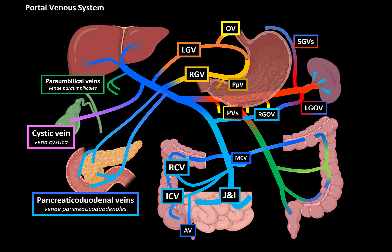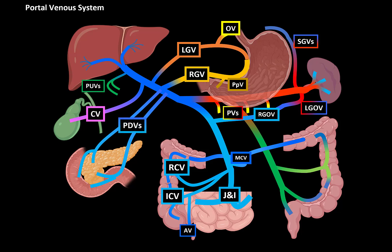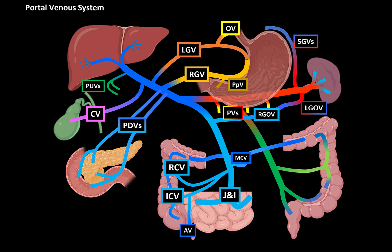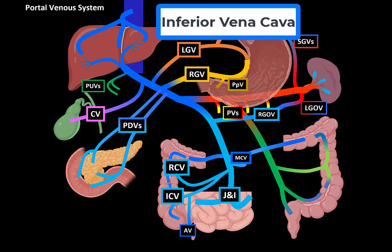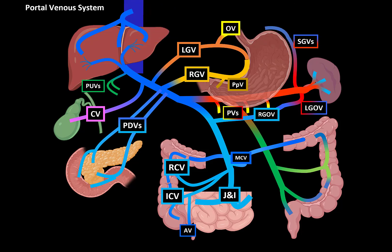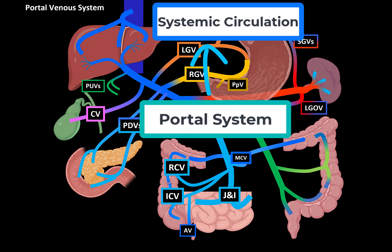All of these veins unite to form the portal vein, which enters the liver and branches off to various lobes. The right, intermediate, and left hepatic veins then drain blood from the liver into the inferior vena cava — that is how blood moves from the portal system into the systemic circulation.